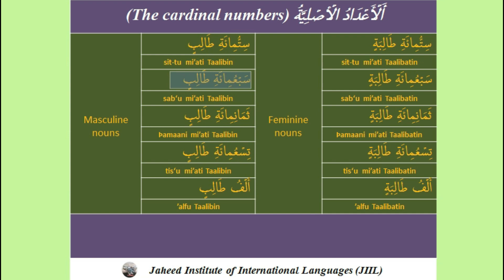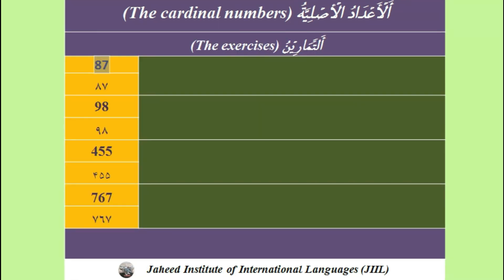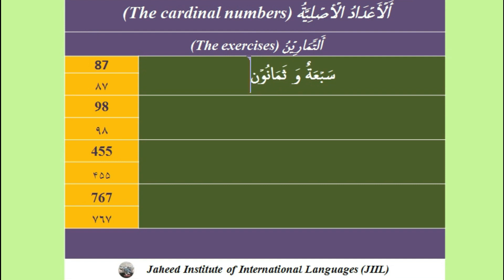It means 700 male students. It means 800 male students. It means 900 male students. It means 1000 male students. It means 800 female students. It means 700 female students. It means 98.